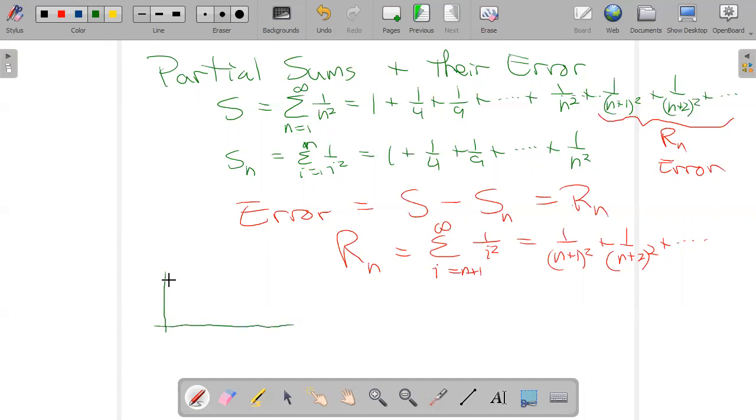Left-hand endpoints or right-hand endpoints. So here's my function. It's decreasing. At some point here, let's say I'm kind of zoomed in. I broke the axis there. This is N. This is N plus one. This is N plus two.